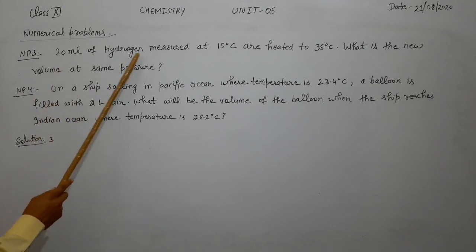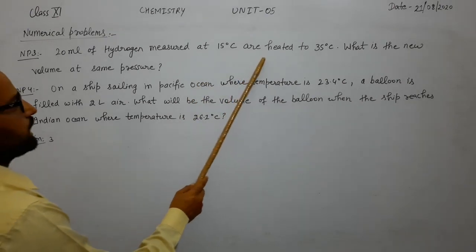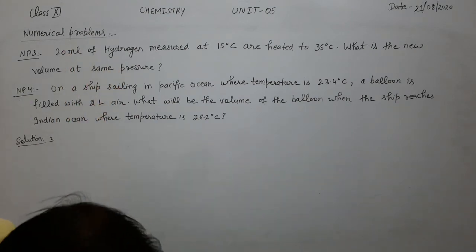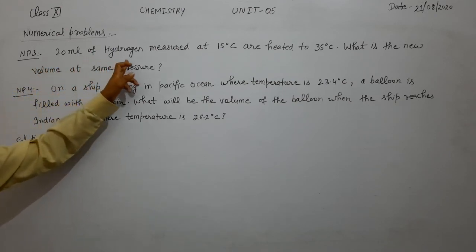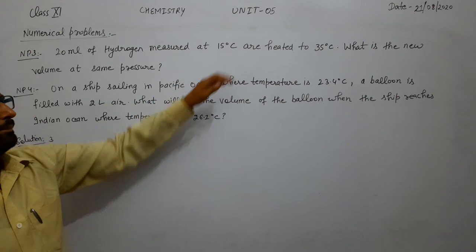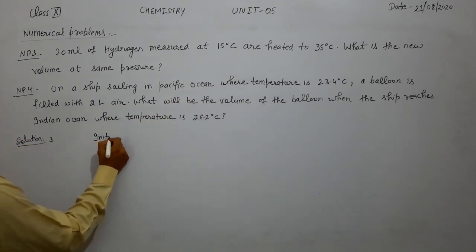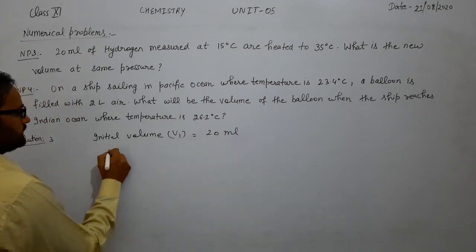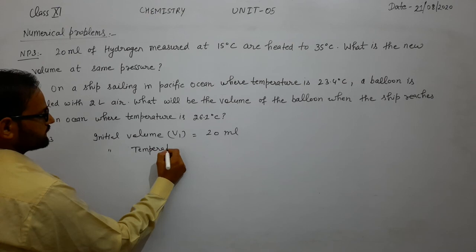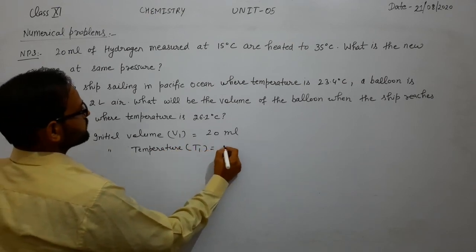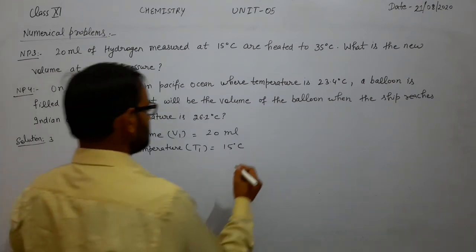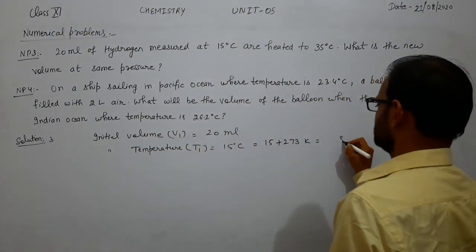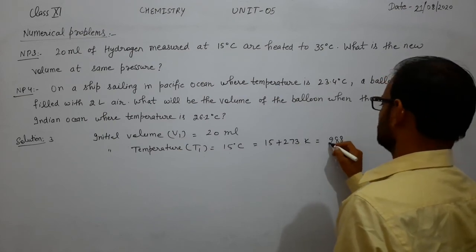Numerical problem third: 20 ml of hydrogen measured at 15 degree Celsius is heated to 35 degree Celsius. What is the new volume at the same pressure? The initial volume V1 is 20 ml, and the initial temperature T1 is 15 degree Celsius, which converts to 15 + 273 = 288 Kelvin.